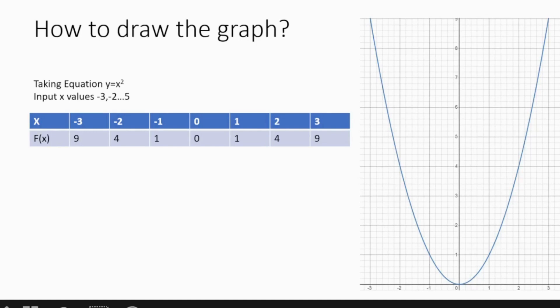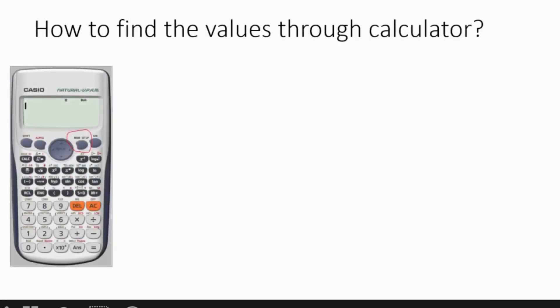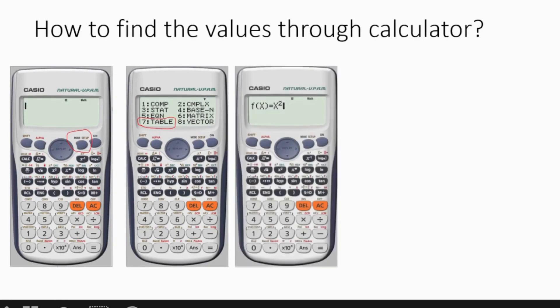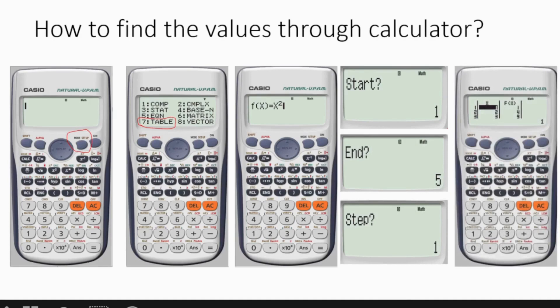This will take a lot of time, so let me show you an easier method — finding coordinates through the calculator. First go to your calculator, press Mode, then go to Table and press 7. Then enter your equation — remember f(x) = y. They will ask for Start, which is the starting value of x, and End, the ending value of x. Then they ask for Step, which is the difference between values, for example 1, 2, 3. This is how the table should look.